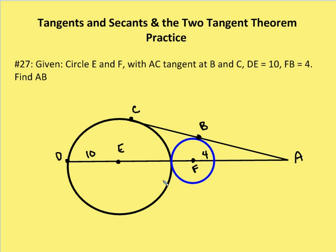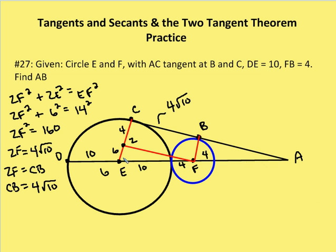They have AC which is tangent to both circles — a common tangent — tangent at point B and C. With DE, the radius of circle E, equal to 10 units, and the radius of circle F — so F to B — equal to four units. So now we want to find out what A to B is. What I want to do is use the processes I've learned for finding common external tangents first, and find the length of CB by drawing the radius to the points of tangency, creating right angles and a rectangle.